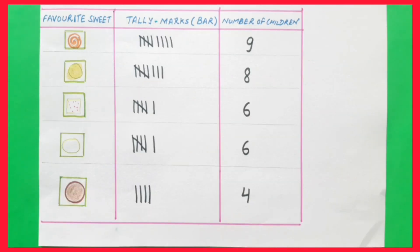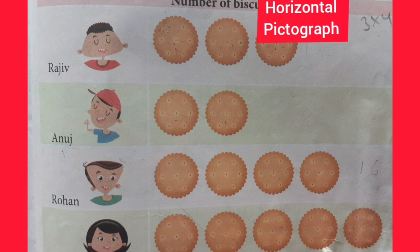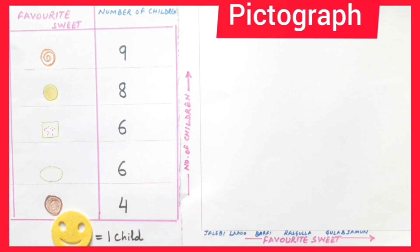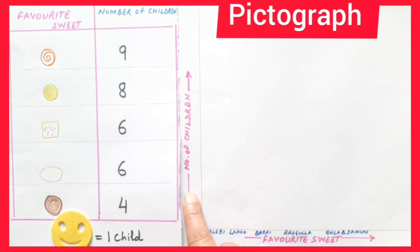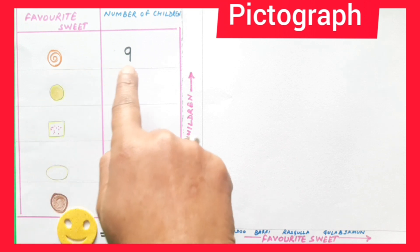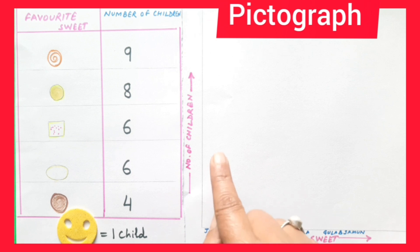Now, children, we will write this information in the form of a pictograph. This is the horizontal pictograph which you have already learned. Today we will write it vertically. Here, from left to right, we have written favorite sweet, and from down to up, we have written number of children. Here, one smiley represents one child. The number of children liking jalebi are nine, so jalebi will be represented by nine smileys in vertical form.